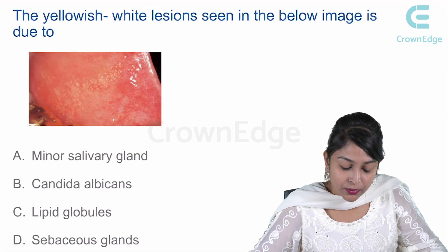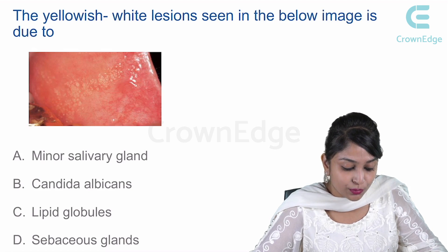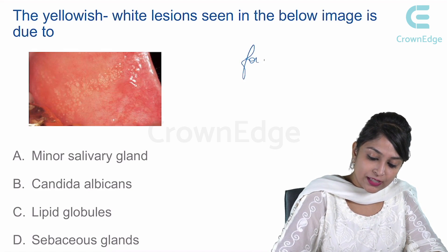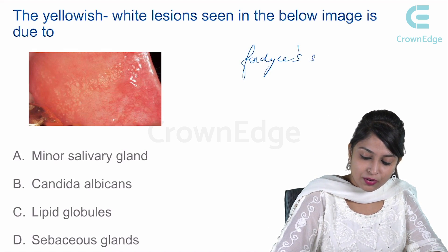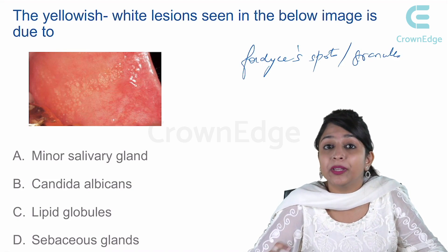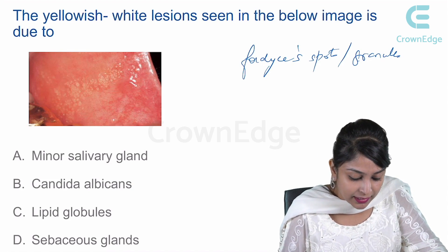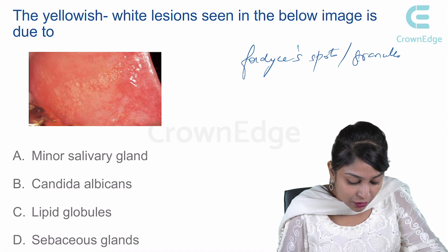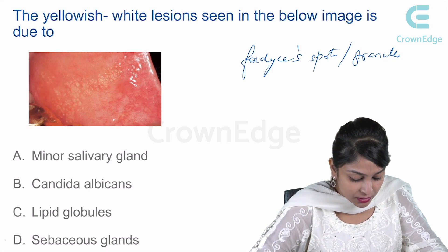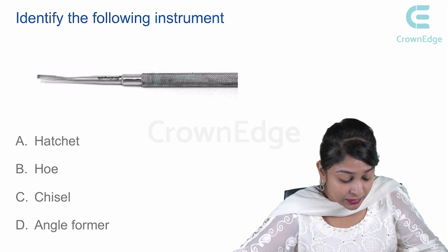The yellowish-white lesions seen in the next image are Fordyce spots or granules, which are an ectopic collection of sebaceous glands. Looking at the options — minor salivary glands, Candida albicans, lipid globules, sebaceous glands — the right answer is option D, sebaceous glands.